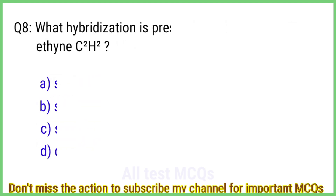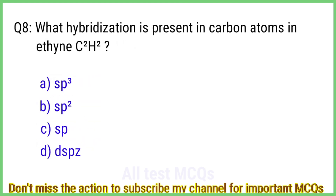Question number 8. What hybridization is present in carbon atoms in ethyne? The right answer is option C: SP.